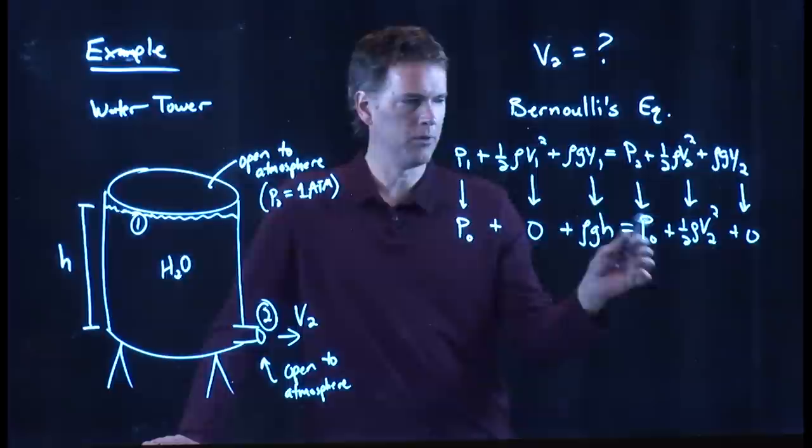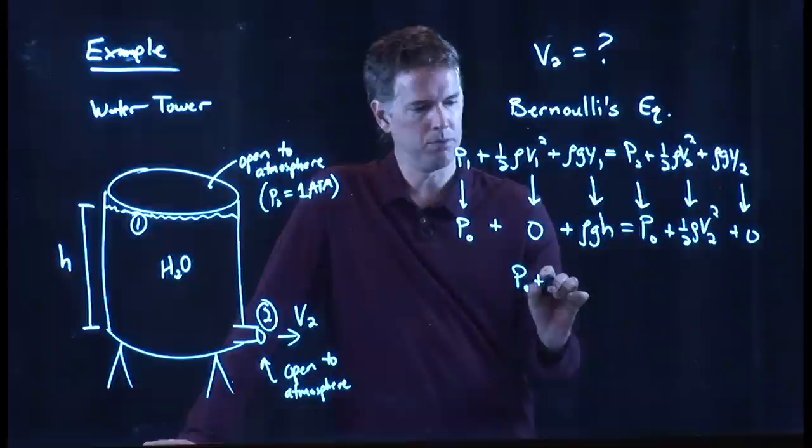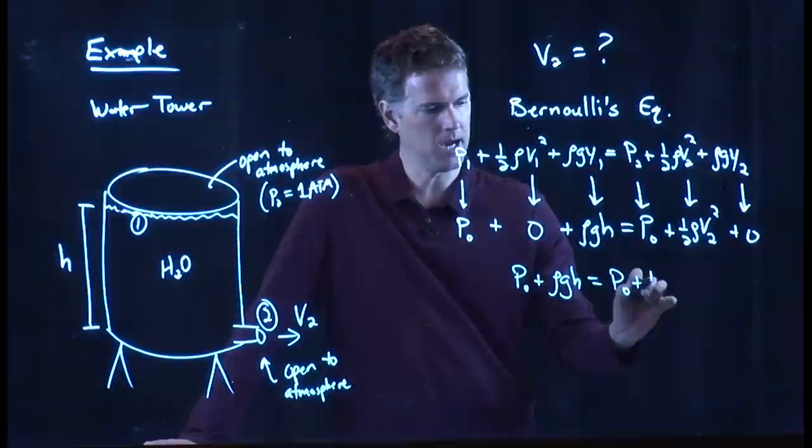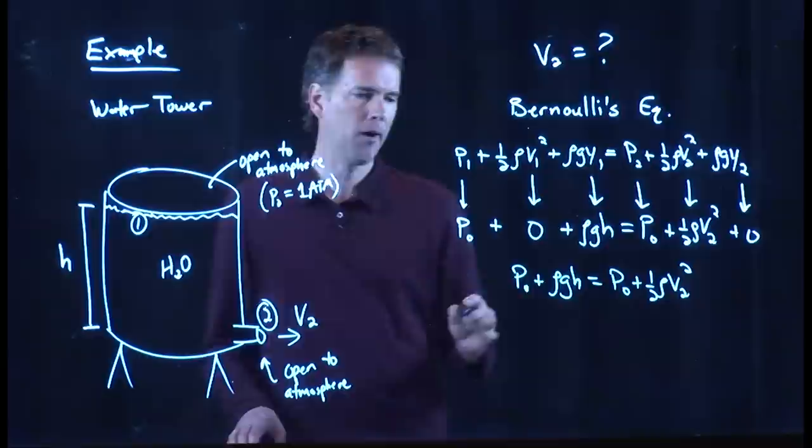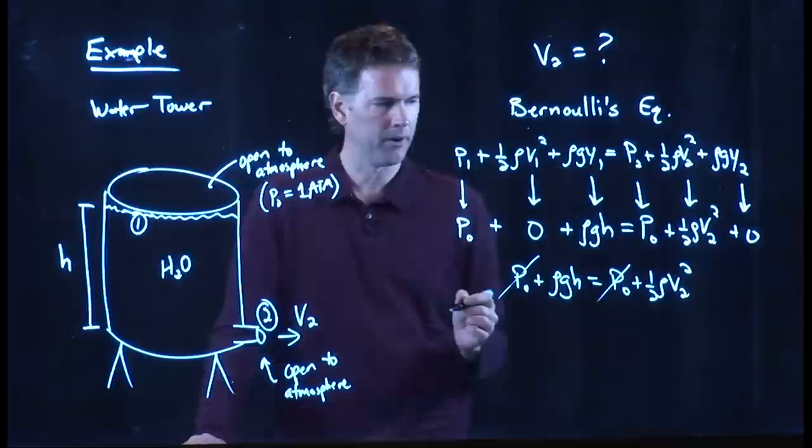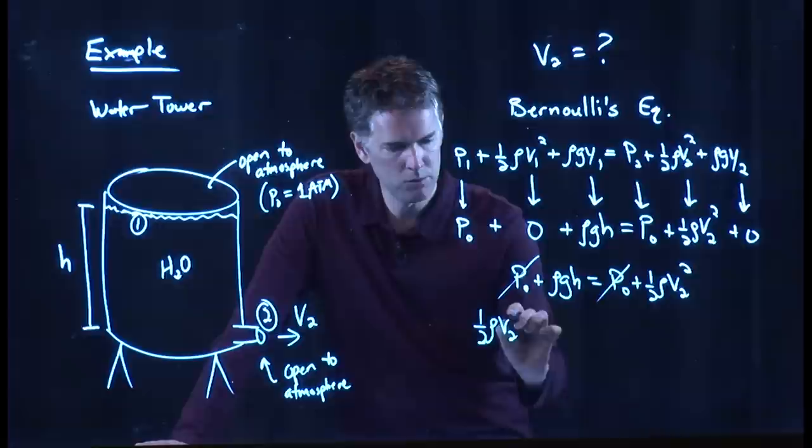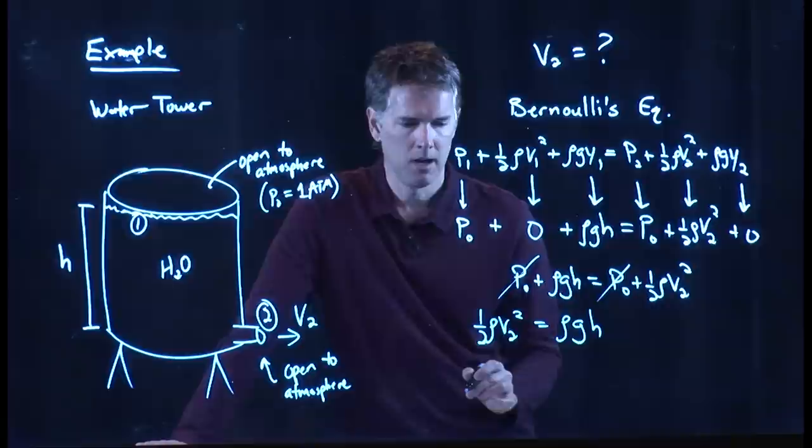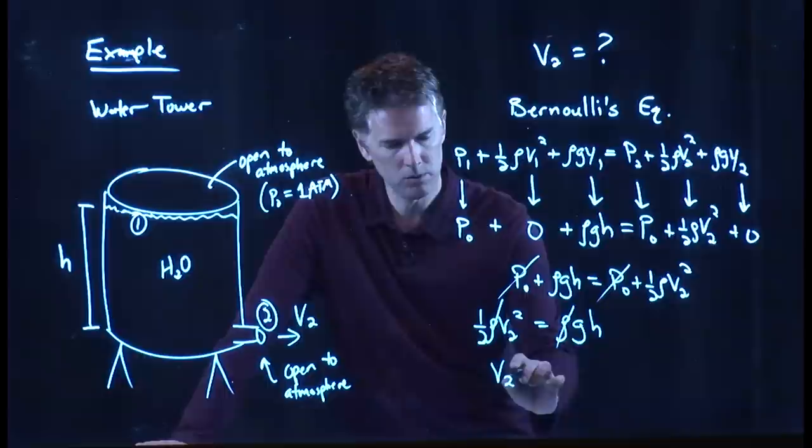So quite a few of these terms dropped out, and look what we're left with. P0 plus rho G H equals P0 plus 1 half rho V2 squared. And now I can subtract P0 from both sides. If it's open to the atmosphere on the top and it's open to the atmosphere on the bottom, that doesn't contribute to the speed of the water. And look what I get. I get 1 half rho V2 squared equals rho G H. I can cross out the rho on both sides. And I get V2 equals the square root of 2 G H.